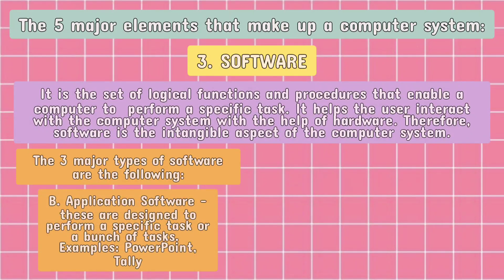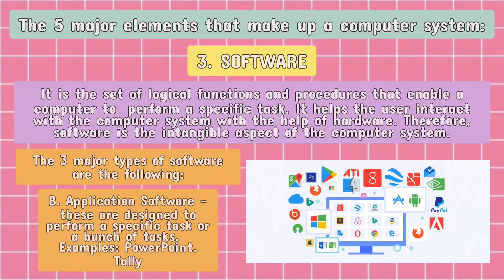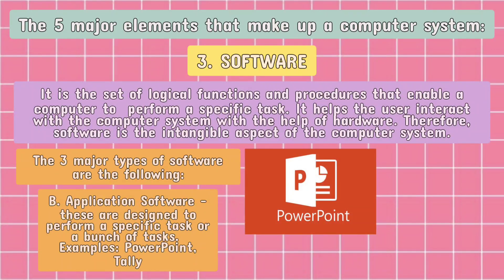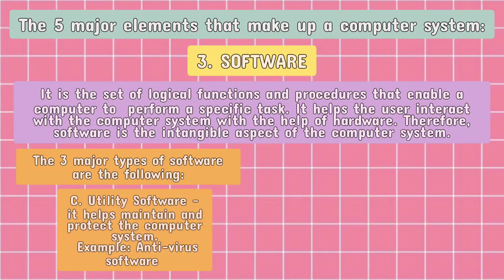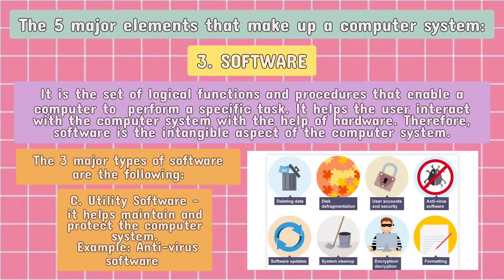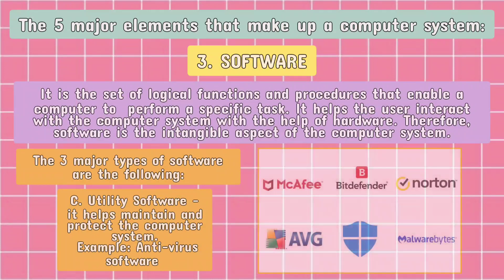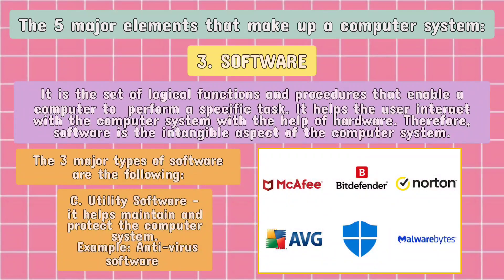Number two, application software. These are designed to perform a specific task or a bunch of tasks. Examples: PowerPoint and Tally. And number three, utility software. It helps maintain and protect the computer system. Example: the antivirus software.